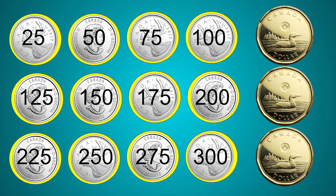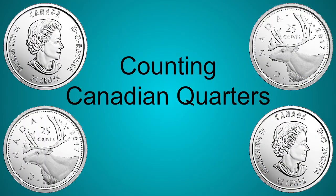Did you notice that a dollar coin showed up on the screen after every four quarters? It takes four quarters to equal a dollar, so after every line of four quarters it equals one dollar. Our last line — one, two, three, four quarters — equals a dollar as well. So 12 quarters would equal three dollars!